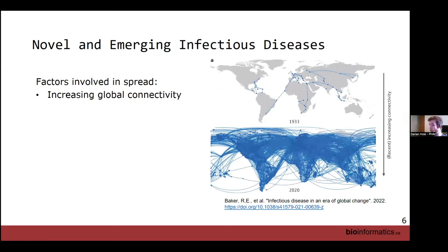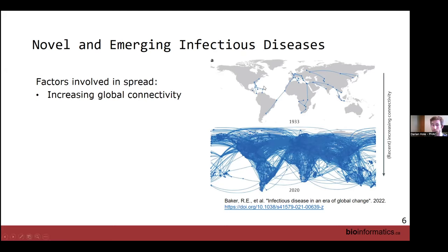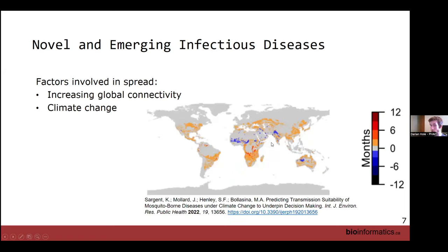Factors involved in the spread and emergence of these diseases: diseases have always followed the movement of humans throughout history — us, our livestock, and also things we don't want following us like mosquitoes and rats. Historically this was through warfare, trade, and restrictive travel. More recently, as shown by modern flight charts, we're very well connected, making it very easy for something to spread from one place to another. Climate change is another factor, impacting the diseases themselves, the vectors that transmit them, and wildlife.